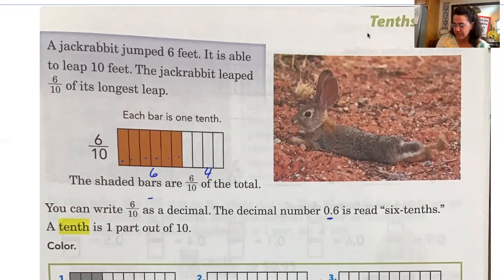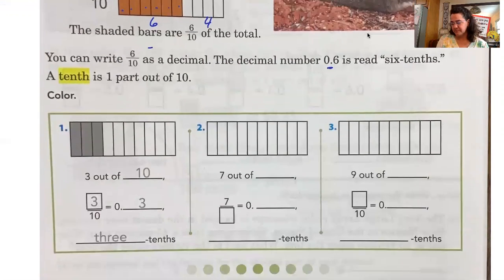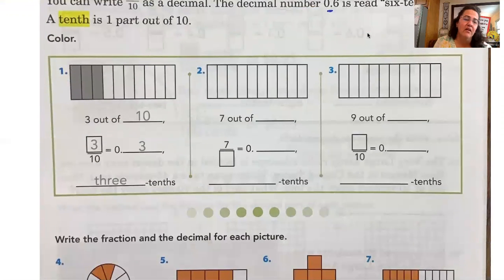A tenth is one part out of ten. So if we look at number one we have three out of ten which then becomes three tenths if we look at it in fraction form, and we would write that as 0.3 in decimal form. Therefore we would have three tenths. Are you ready? Because now it's our turn.